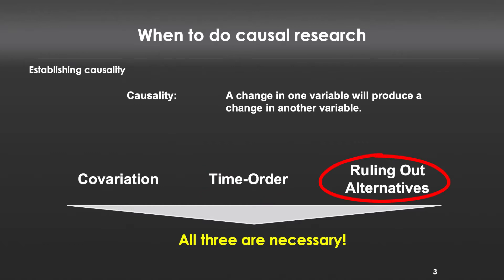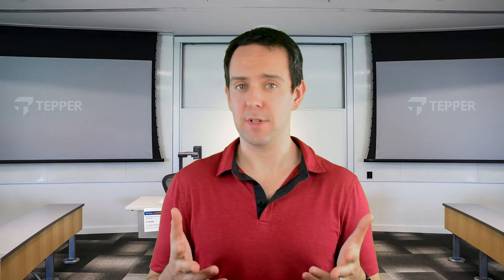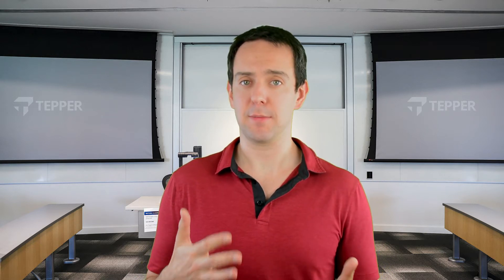But the really big one is this idea of ruling out alternative explanations. What's critical is we can't rule out some or even most alternative explanations — we have to rule out every single possible alternative explanation to a causal mechanism that we're proposing. And there's really only one way to do that, and that is with an experiment.